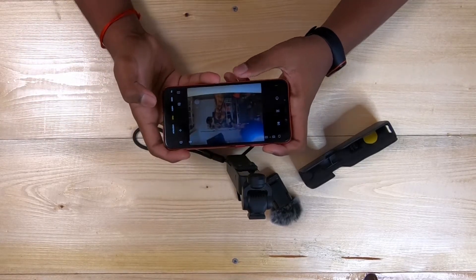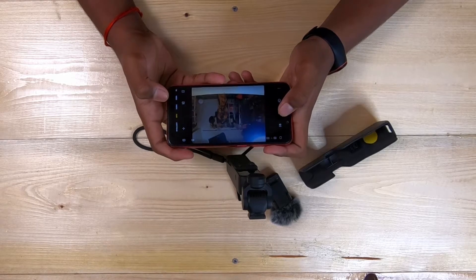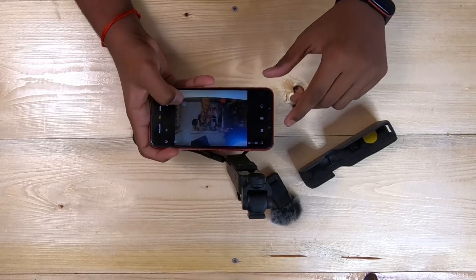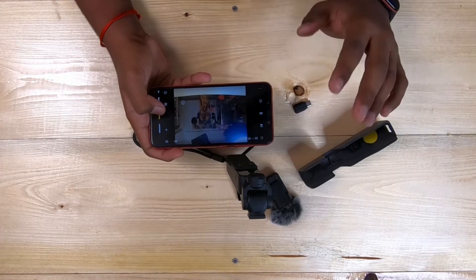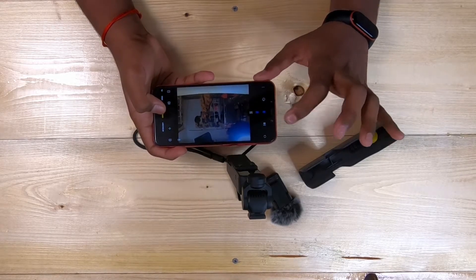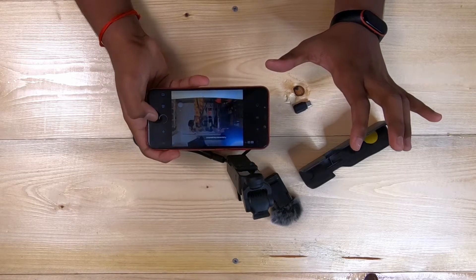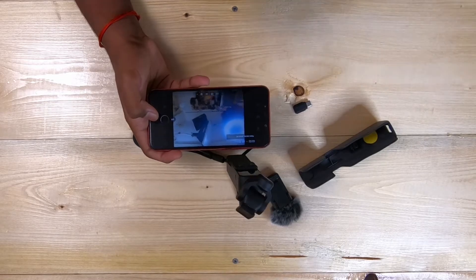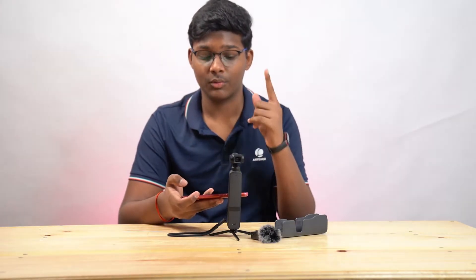And then we have another panoramic shot, which is a 3x3, which means a 3x3 grid. So, we again, we go here, we change the 3x3, and again, we click the shutter button, and it takes top 3, middle 3, and then bottom 3, and merges it all into one single photo.